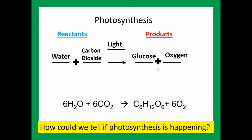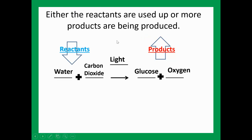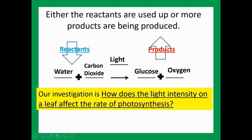So how can we tell if photosynthesis is happening? When photosynthesis happens, either the reactants are used up or more products are being produced. So the amount of water or carbon dioxide will decrease, and the amount of glucose and oxygen will increase as photosynthesis goes on. The amount of reactants goes down and the amounts of products go up. We can use this information to test what's going on.